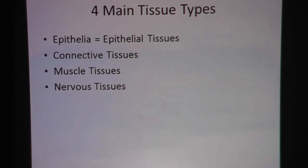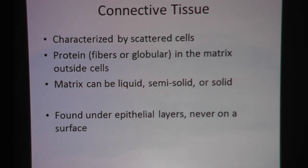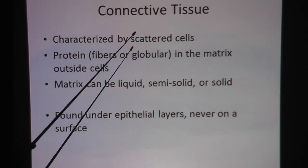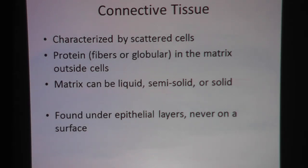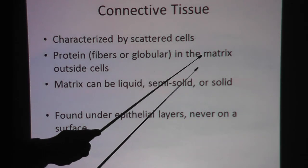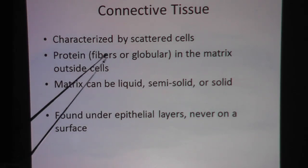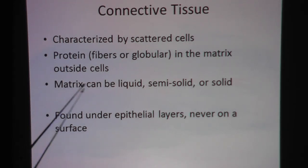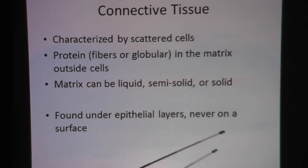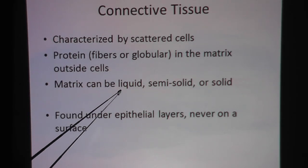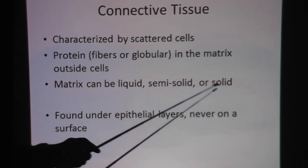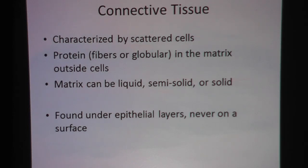Because we're talking about cartilage, we will zoom in on connective tissue. Remember, connective tissue is usually seen with scattered cells. The spaces in between these scattered cells will be matrix, and oftentimes in the matrix you will see proteins. The matrix in cartilage will be semi-solid, although connective tissue also has liquid matrix and solid matrix. Connective tissue is never found on the surface.